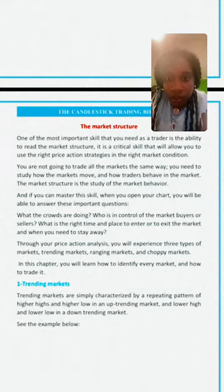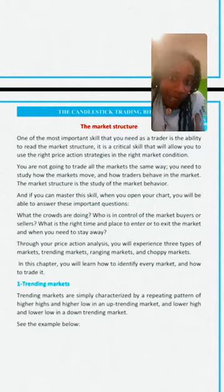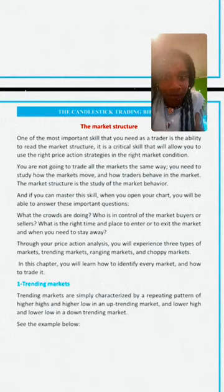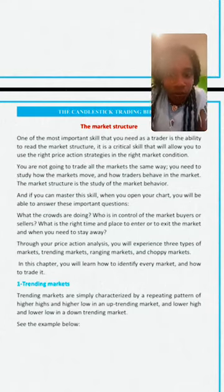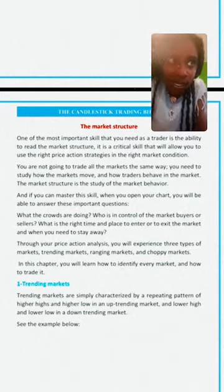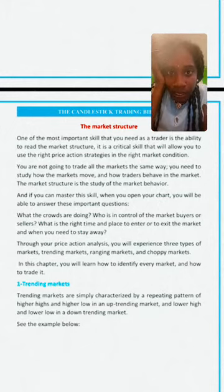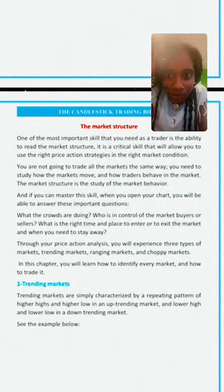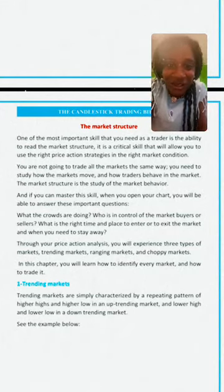A naked chart is when you don't have indicators — you just pull up a chart and it's just the chart. It becomes non-naked when you put on indicators like the Fibonacci retracement, the EMA (Estimated Moving Average), Bollinger Bands, or the Stochastic — all those things they put on the bottom of the chart.